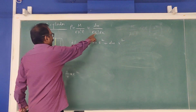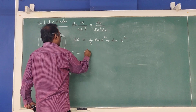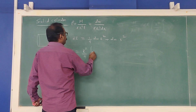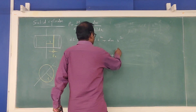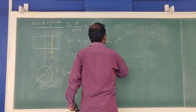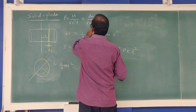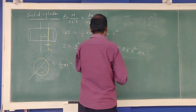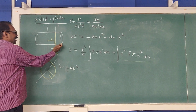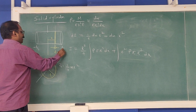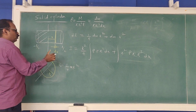Integrating: I = ∫(R²/4) dm + ∫x² dm. Substituting dm = ρπR² dx and integrating from −L/2 to +L/2. The first integral gives (R²/4) · ρπR² · L, and the second gives ρπR² · ∫x² dx = ρπR² · [x³/3] from −L/2 to +L/2.